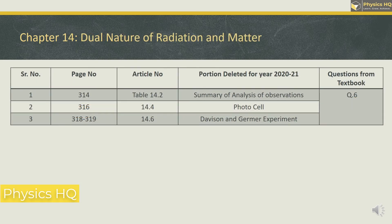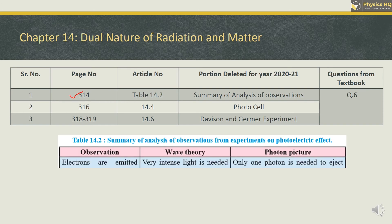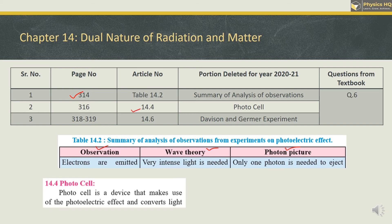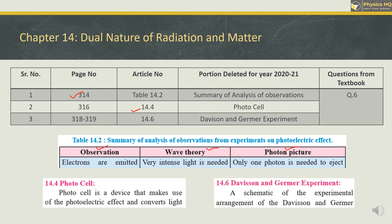For Dual Nature of Radiation and Matter, there is a big comparison table on page 314 comparing wave theory and the photon picture — you can avoid this. Section 14.4 — the photo cell — you can leave it. There is also a de Broglie experiment which you can skip. Question number 6 can be skipped.